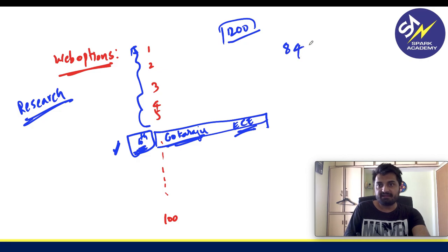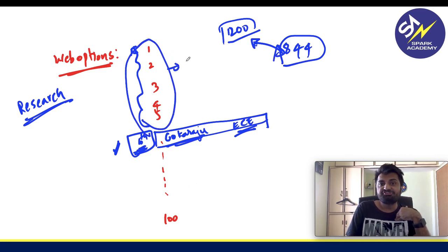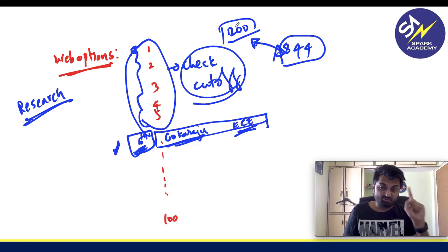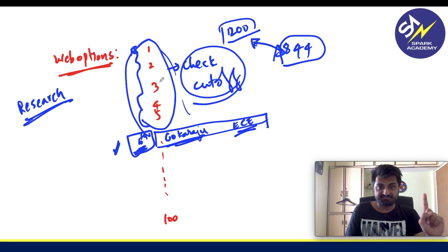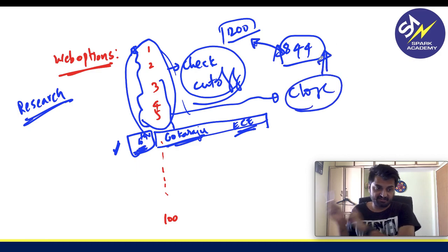So, that means in the next counseling, that means you would have missed the seat narrowly. So, like this, whatever options you have given, you check the cutoff depending on the reservation. Check the cutoff. So, you will know where you stand. So, if those ranks are close, let us say, 3rd, 4th, 5th options which you gave are close to your rank. That means you have a chance in the 2nd counseling.